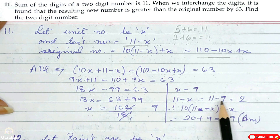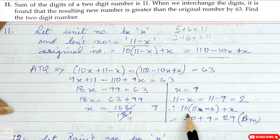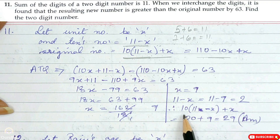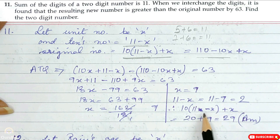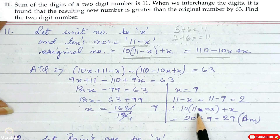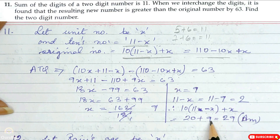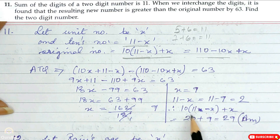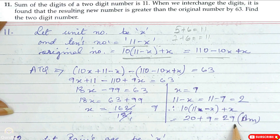So x is 9, and 11 minus x is 11 minus 9 = 2. The original number: 10(11 minus x) plus x = 10×2 plus 9 = 20 plus 9 = 29. Hence the two-digit number is 29.